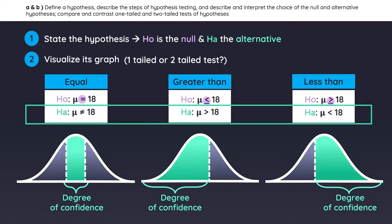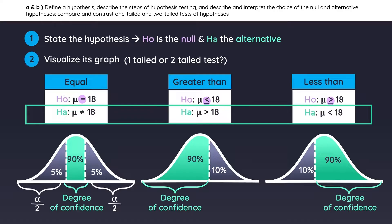Notice that these areas contain what's called the degree of confidence. For example, if the researchers want to test their hypotheses with 90% confidence, then these areas would be 90%. The probability that remains in the tails is 10%, which is also known as alpha. Notice how for the two-tailed test, we split alpha evenly between the two tails. But for the one-tailed tests, the entire value of alpha is contained in a single tail.